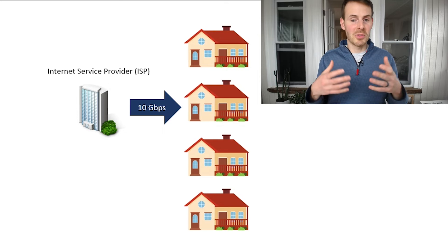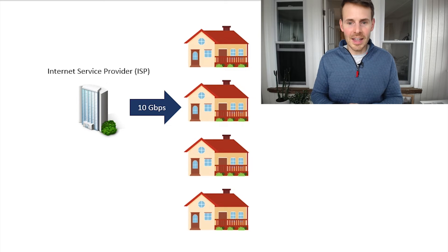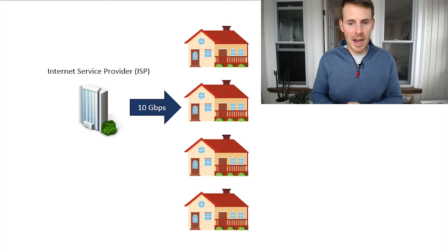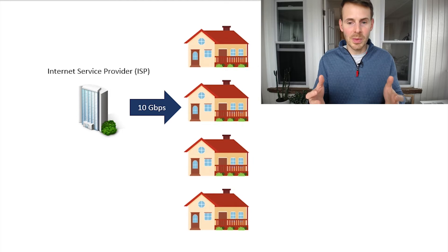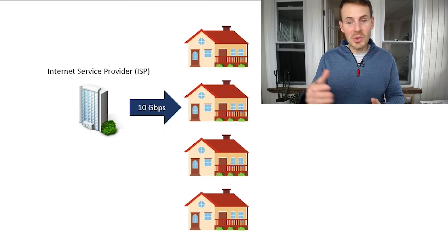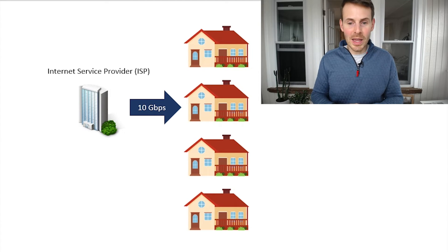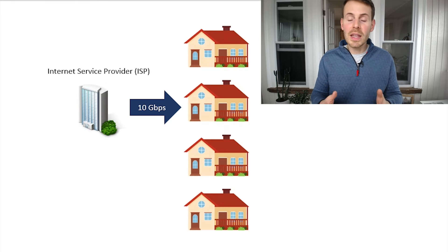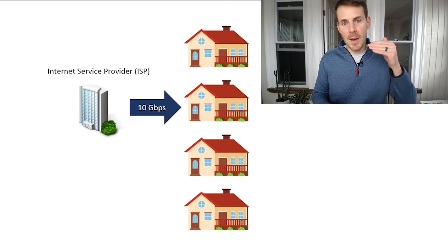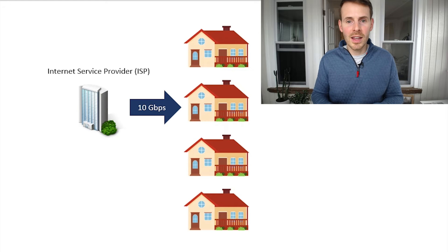So what happens as a result of this? If everybody's using the internet at the same time, the ISP isn't able to provide that maximum internet speed to all the homes in the local area. As a result, you get a reduced internet speed, and that's why a lot of the time when you run a speed test, you'll get a speed that's lower than the maximum internet speed detailed in your internet plan.